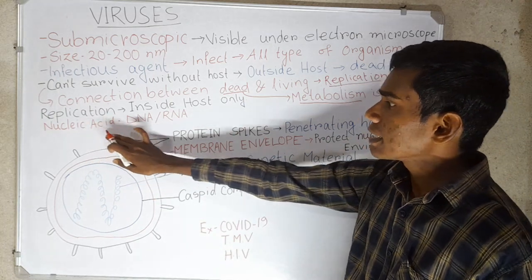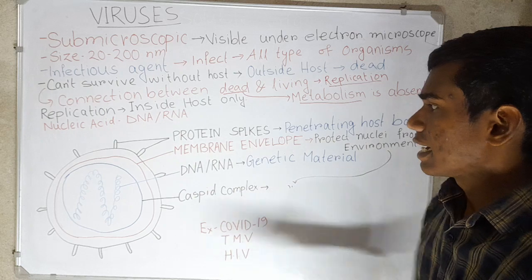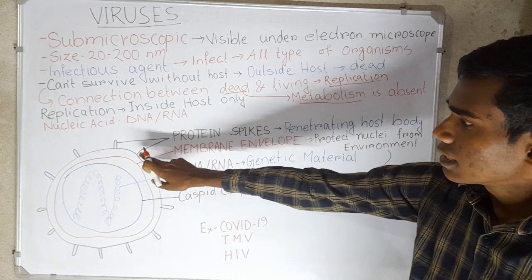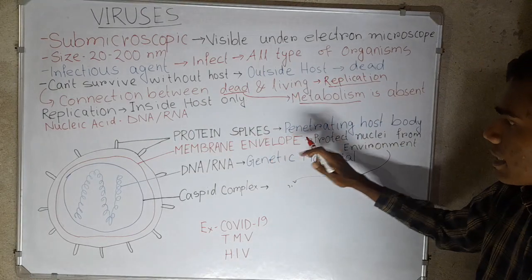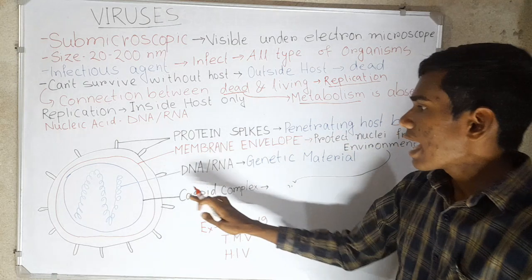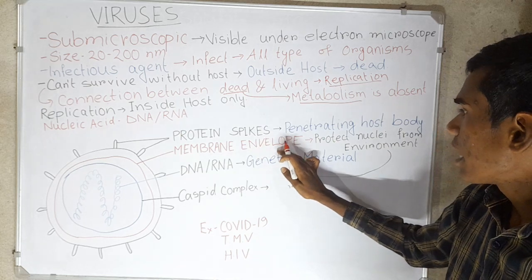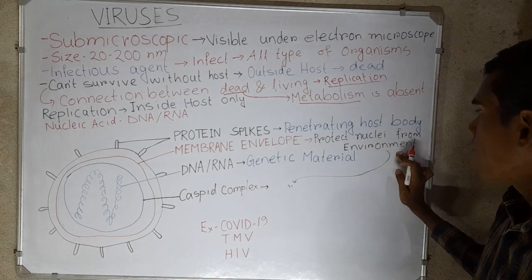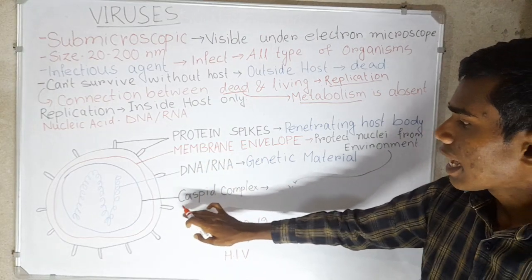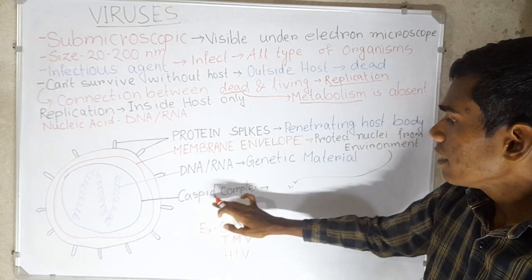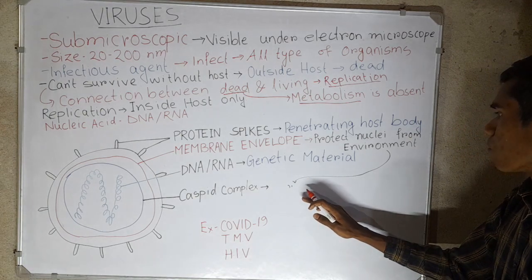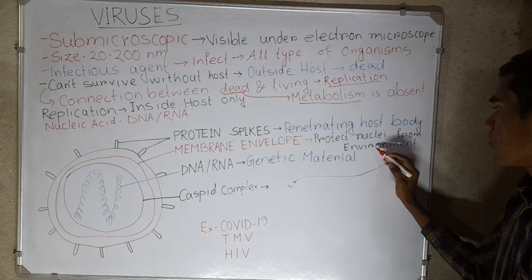Their nucleic acid is either DNA or RNA. They have protein spikes — as you can see in this figure, the protein spikes help in penetrating the host body. They have a membrane envelope for protection of the nucleus from the environment. But in some viruses, there is a capsid complex in place of the membrane envelope, which also provides protection of the nucleus from the environment.